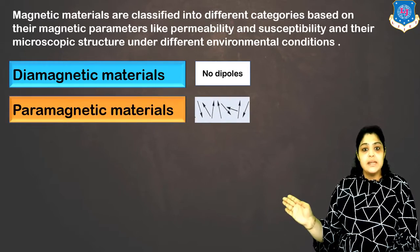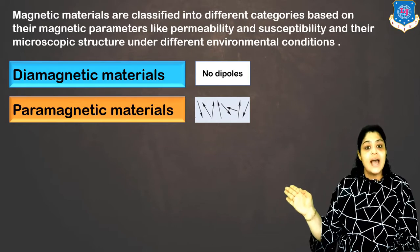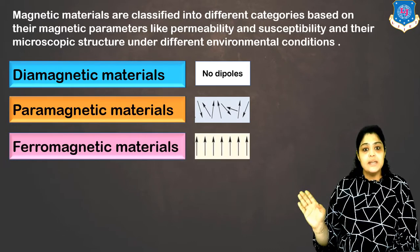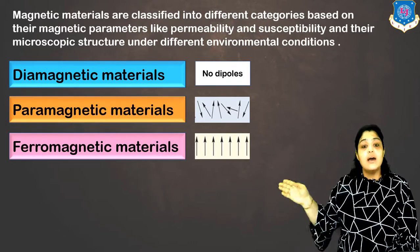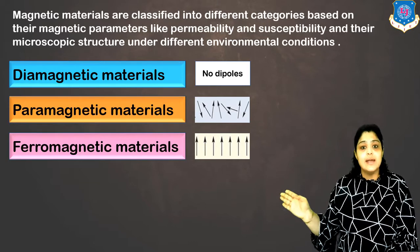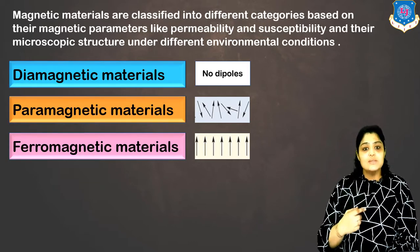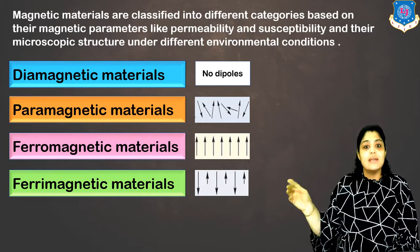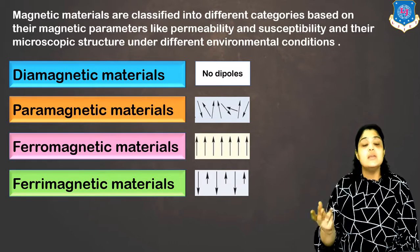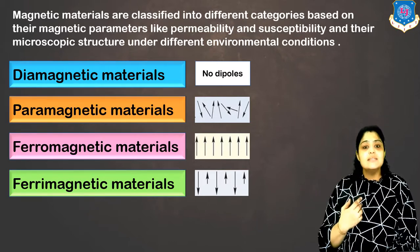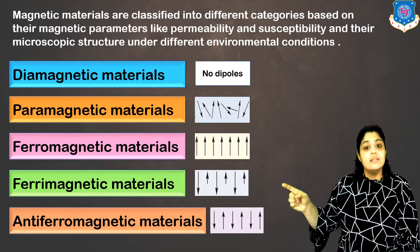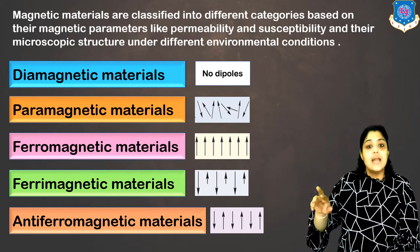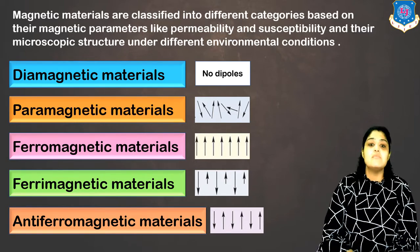The next one is paramagnetic materials. You can see in the diagram that these materials have randomly oriented dipoles. The third category is ferromagnetic materials which have dipoles which are parallel to each other. The next one is ferrimagnetic materials which have anti-parallel dipoles, and notice in the diagram the dipoles are of uneven or different magnitude. The last category is anti-ferromagnetic materials — again anti-parallel, but all the adjacent dipoles have the same magnitude.